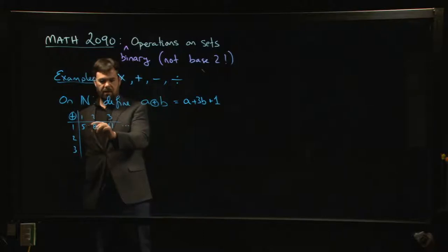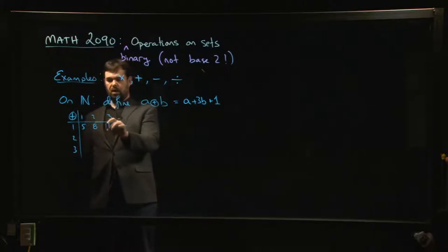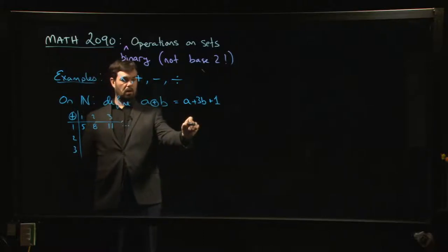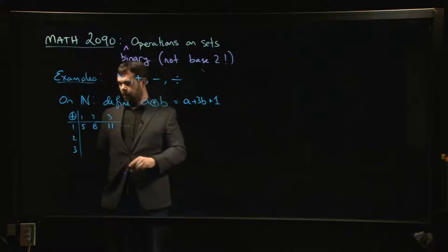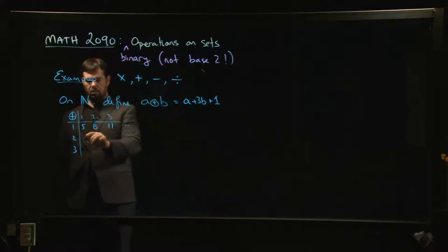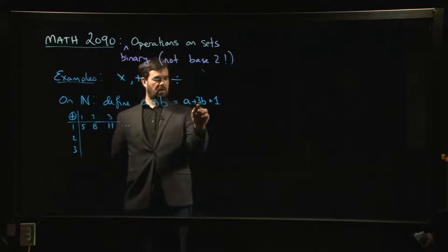Actually, maybe you can probably guess what the pattern is going this way—you're counting up by 3s as you go along, right? The next one, 1 ⊕ 4, you're going to get 14, then 17, and so on. As you go down, if we did 2 ⊕ 1, so then we're doing 2 + 3 times 1, so 2 + 3 + 1 more, you get 6.